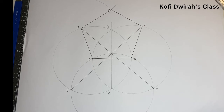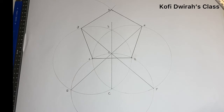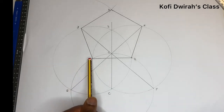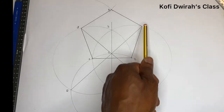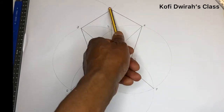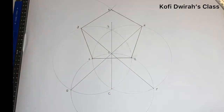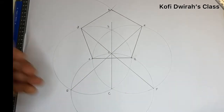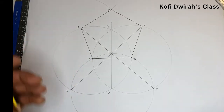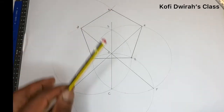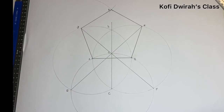Now we have all five sides of the pentagon: side AB, BH, HK, KJ, and side AJ. So this is how to construct a pentagon giving one side.